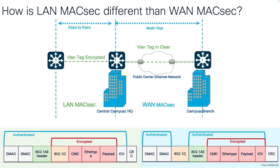WAN MACsec extends this encryption capability to wide area networks, making it perfect for securing multi-hop connections over a public or carrier-provided network. While LAN MACsec is ideal for local links, WAN MACsec is what we need for connecting multiple locations over longer distances — between campuses, campus to branch, or campus to data centers.